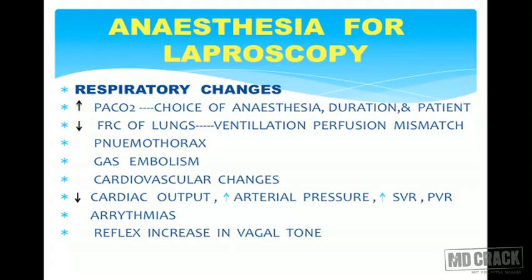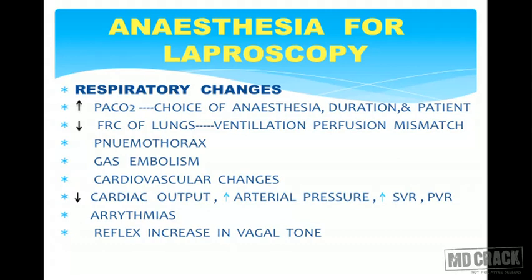Cardiovascular changes with pneumoperitoneum include decreased cardiac output, increased arterial pressure, increased systemic vascular resistance and peripheral vascular resistance, common arrhythmias, and a reflex increase in vagal tone. To summarize the major changes: respiratory — increased PaCO2, decreased FRC, ventilation-perfusion mismatch, air and gas embolism, and risk of pneumothorax; cardiovascular — decreased cardiac output, increased arterial pressure, increased systemic vascular resistance, arrhythmias, and increased vagal tone.